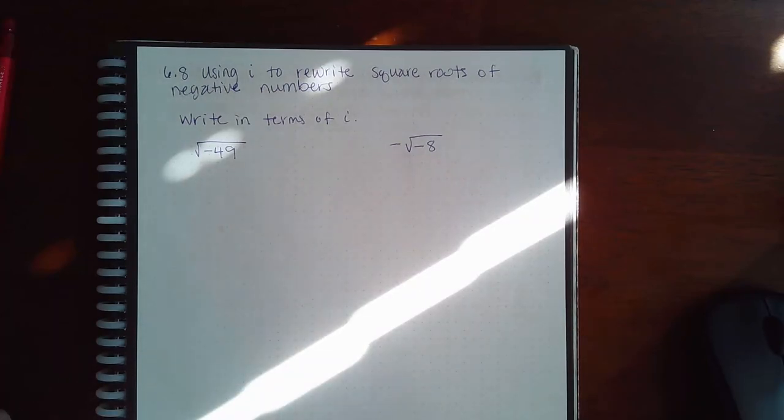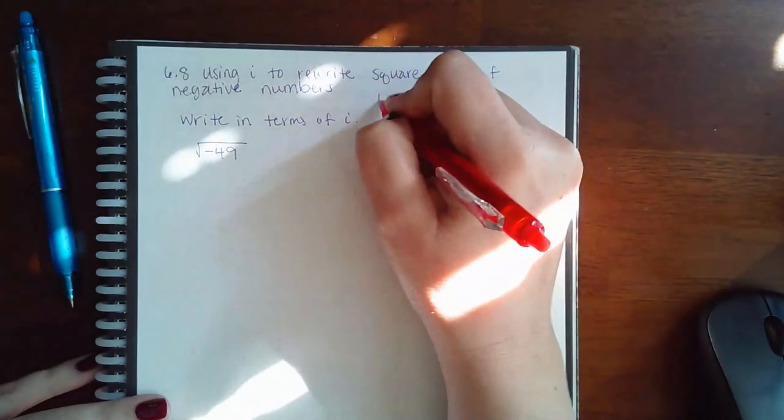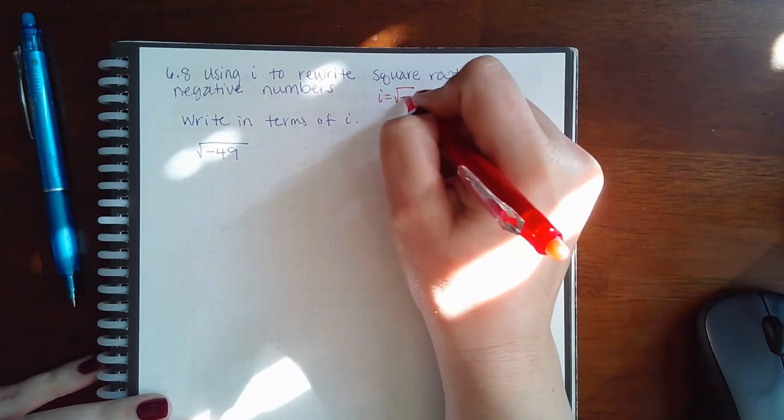Here I'm using i to rewrite square roots of negative numbers. Now before we start talking about that, we need to understand the definition of i. i is equal to the square root of negative one.